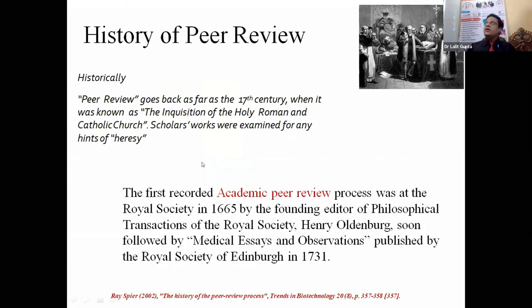The history of peer review is very interesting. It dates back to the 17th century when scholarly works were checked for any hints of hearsay or plagiarism by the Inquisition of the Holy Roman and Catholic Church. The first recorded academic peer review process was at the Royal Society in 1665 by the founding editor of Philosophical Transactions of the Royal Society, Henry Oldenburg. It was soon followed by Medical Essays and Observations, published by the Royal Society of Edinburgh in 1731. Since then, there has been no going back for peer review.